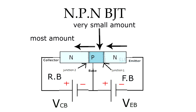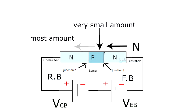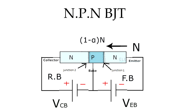Let's assume N is the number of electrons passed from the emitter to the base and collector region. Out of these, (1 minus alpha) × N recombine with holes in the base region, and alpha × N move to the collector. In practice, only 2 to 5 percent of electrons recombine in the base and 95 to 98 percent pass to the collector.